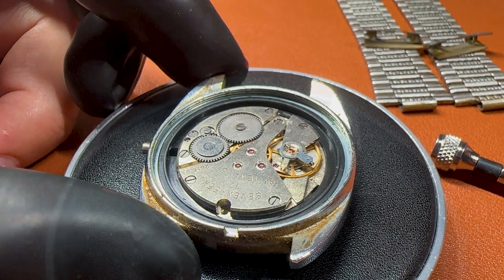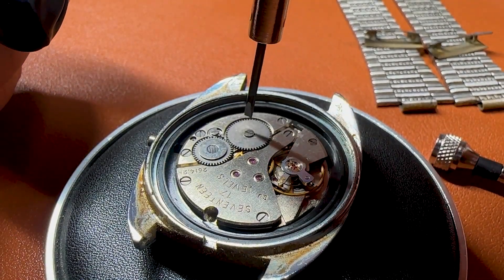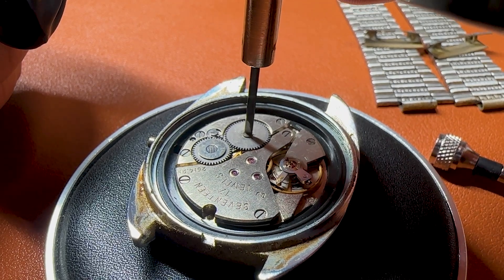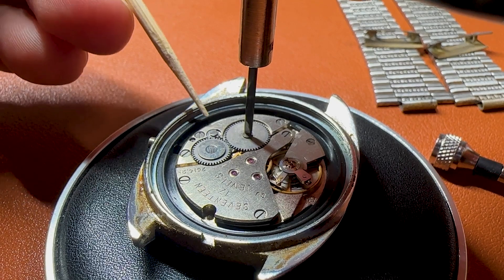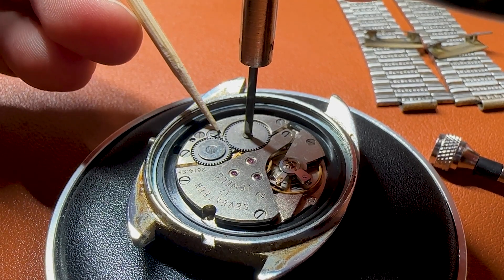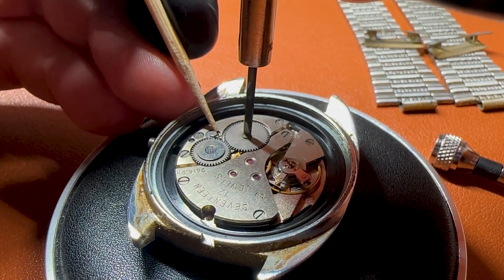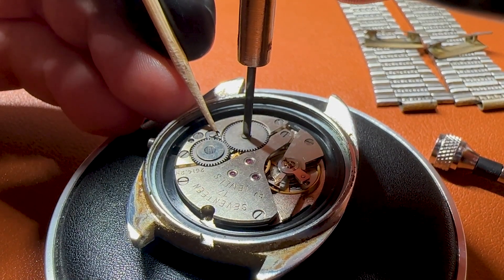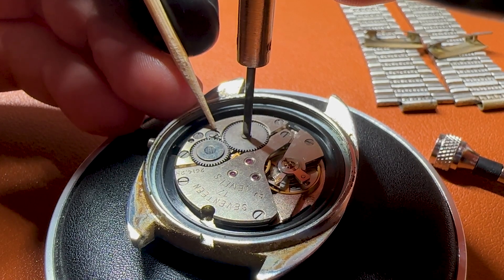Before I get the movement out of the case, I want to release the tension and the power from the main spring so I won't be putting too much pressure on the whole movement while it sits on a stand. Unfortunately I cannot do this unless I remove the click screw and the click itself.